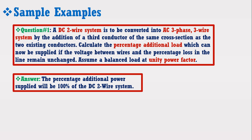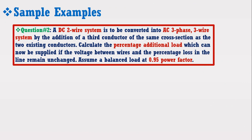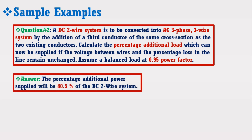This technique is very useful in solving MCQ-based tests for job interviews. Now let's apply these findings on other examples. Suppose the previous question is repeated and you are asked to calculate the percentage of additional load that can be transmitted by the 3-phase system at 0.95 power factor, and I ask you to answer without using a calculator. It is possible because we know that the percentage additional power supplied at 0.95 power factor will be 80.5% of the DC 2-wire system.